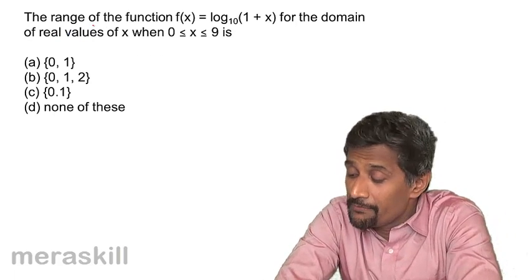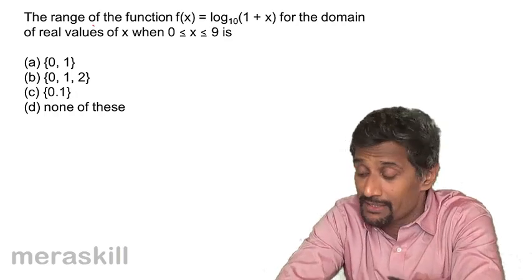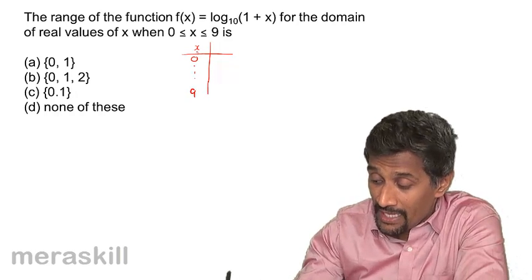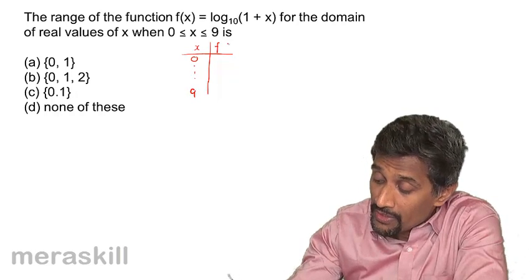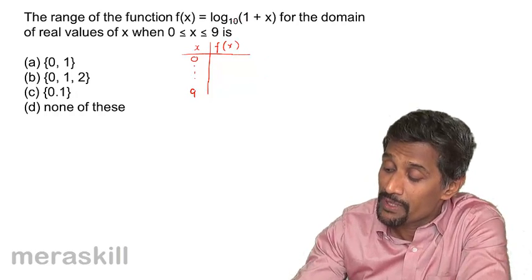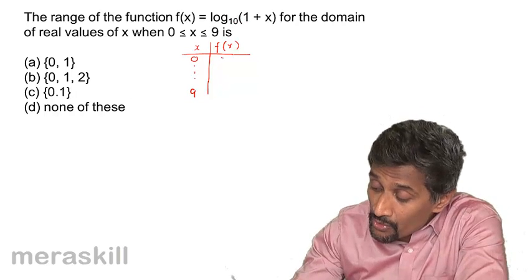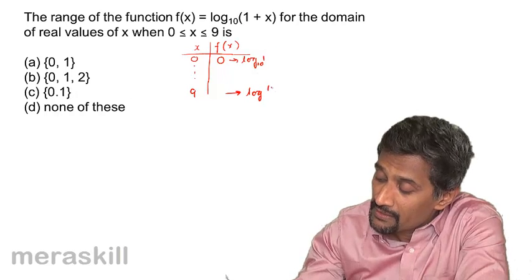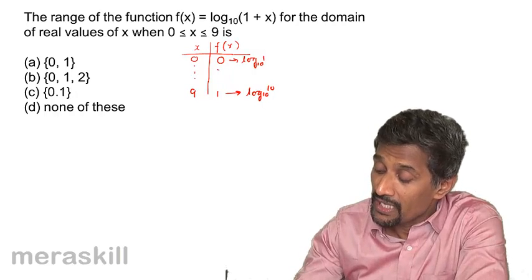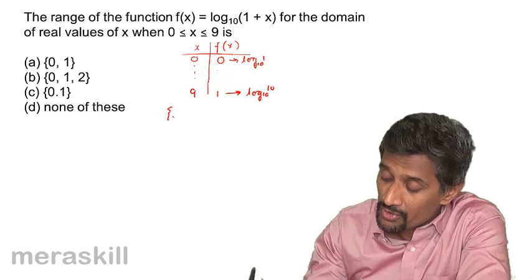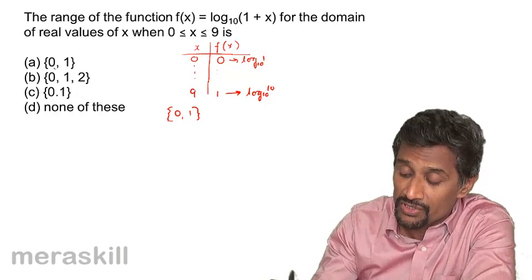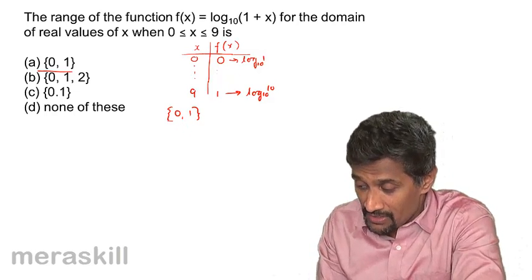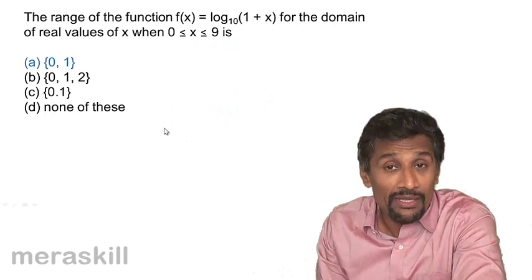The range of the function F(x) = log₁₀(1+x) for the domain of real values from 0 to 9. The smallest value x can take is 0, giving F(0) = log₁₀(1+0) = log₁₀(1) = 0. The largest value is x = 9, giving F(9) = log₁₀(1+9) = log₁₀(10) = 1. So all values of F(x) lie between 0 and 1, and the range of the function is [0, 1].